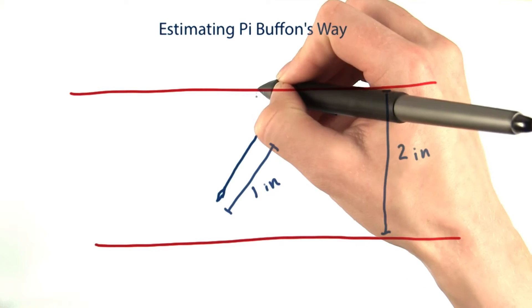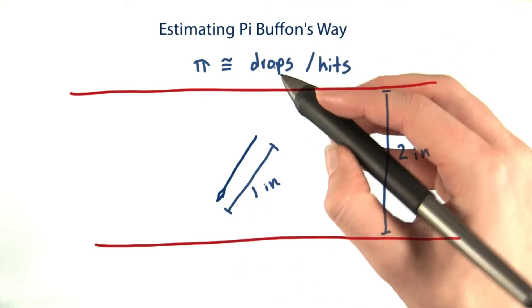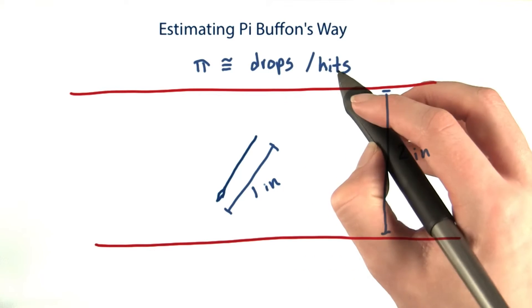Call it a hit if the needle is hitting one of the lines. If you do this a whole bunch of times, pi will be approximately equal to the number of drops over the number of hits.